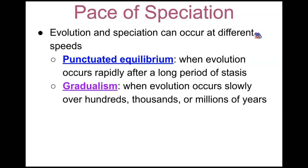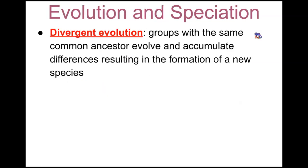Gradualism is when evolution occurs slowly over hundreds, thousands, or millions of years. Ultimately when we think of evolution, it seems more like a gradual process that takes a lot of time.